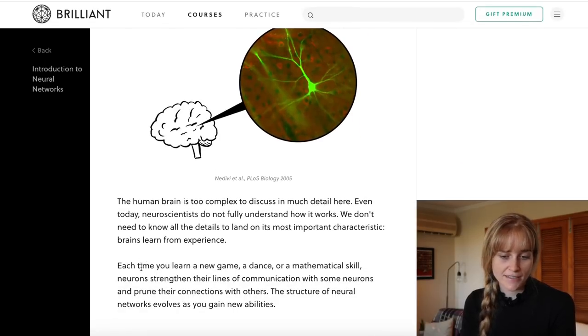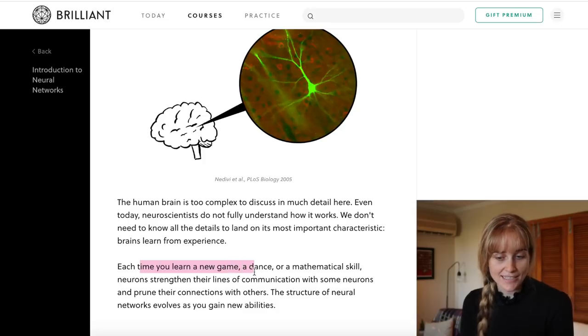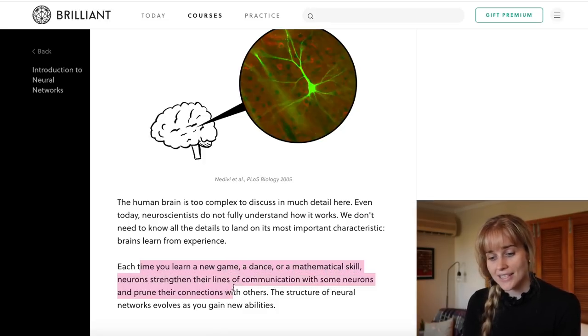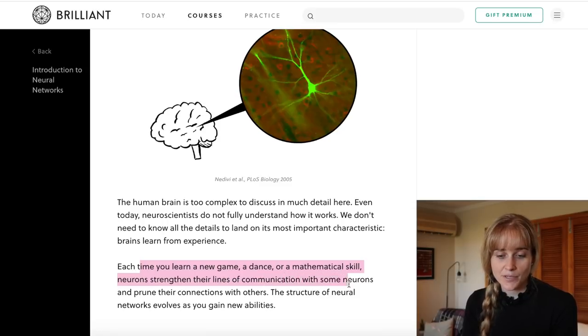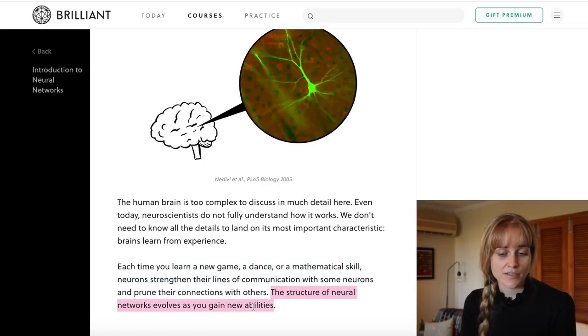So for us every time we learn a new game, a dance or a mathematical skill, neurons strengthen their lines of communication with some neurons and prune their connections with others. The structure of neural networks evolves as you gain new abilities.